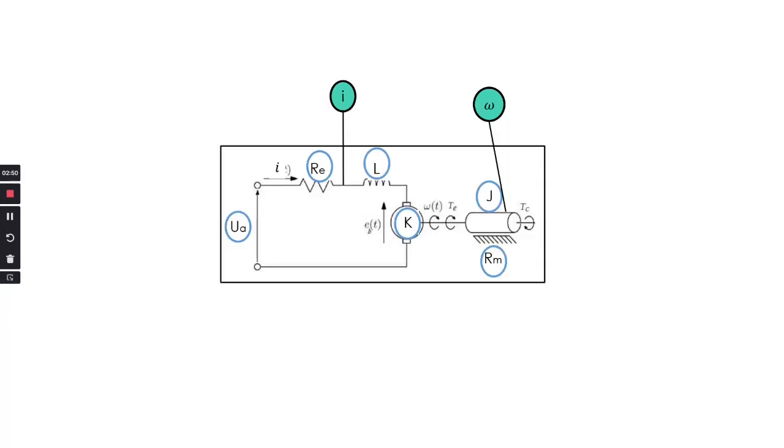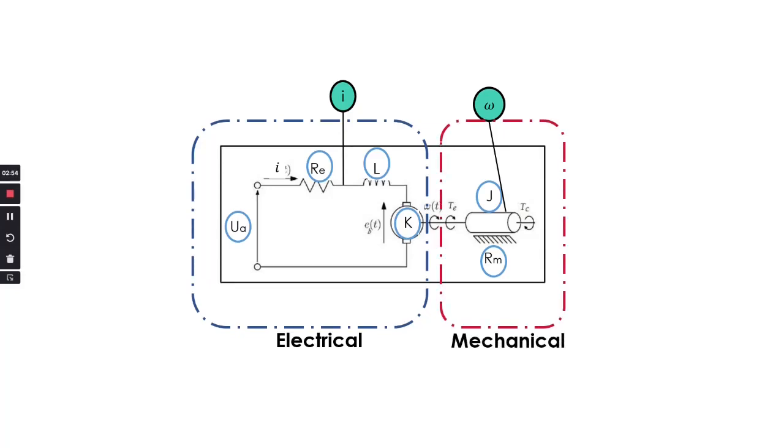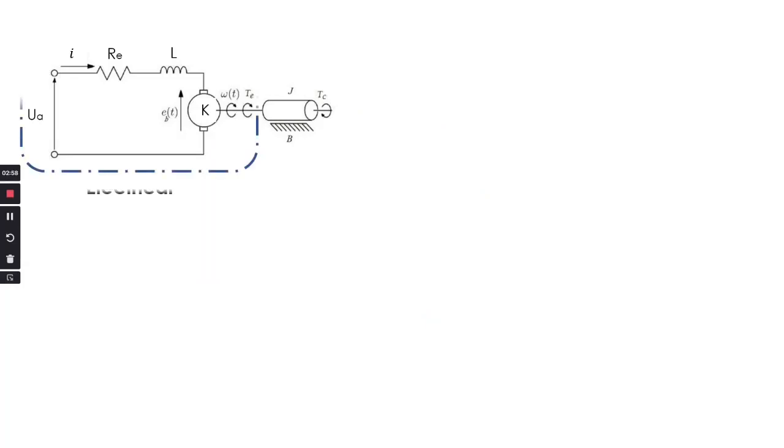The DC motor is a mechatronic system. Here is the electrical part and here is the mechanical part. First we will try to write equations for the electrical part. Coming to the electrical part, we have an input voltage, there is a current i, electrical resistance, inductance, and the DC motor.